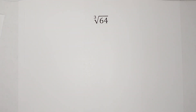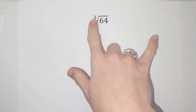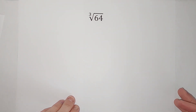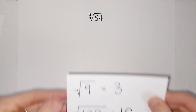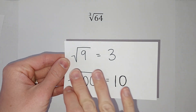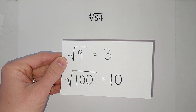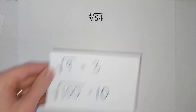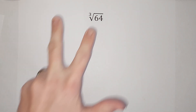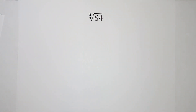You have probably been working with square roots, and then they put a little three there and it might have been like 'what?' We're going to talk about it. You probably know the square root of nine is three, square root of one hundred is ten, because this is asking what number times itself gives me this number. When there's a three there, it is asking what number times itself three times gives me this number.